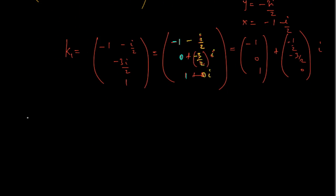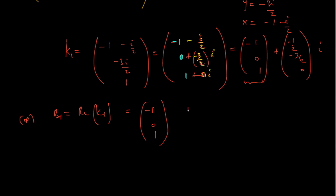Having gotten this, the next step is to find b1 and b2. We say b1 is the real part of k1, which is the part with no i attached — that is, negative 1, 0, 1. And b2 is the coefficient of the imaginary part, which is negative 1/2, negative 3/2, and 0.